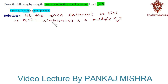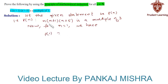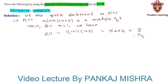For n equal to 1, we have P(1) equal to 1 times (1+1) times (1+5), which is equal to 1 times 2 times 6, giving us 12. Therefore P(1) is true for the given statement.